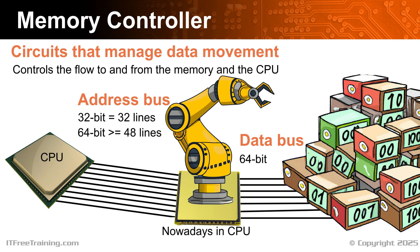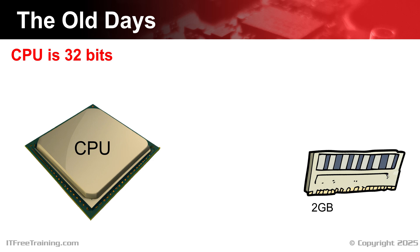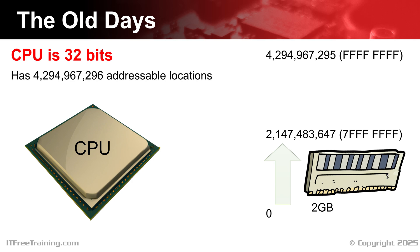To gain a better understanding of how memory and virtual memory works, let's look at how computers in the past would access memory. In this example, let's consider an old 32-bit CPU that does not support modern memory management features. The computer has 2 gigabytes of memory installed. In order to access a specific byte in memory, the CPU utilizes an address — essentially a numerical value that selects the desired byte. For 2 gigabytes of memory, the number of addresses would be over 2 billion. Since this is a 32-bit CPU, the largest number of addresses that can be accessed is just over 4 billion, so essentially the upper memory is unused.